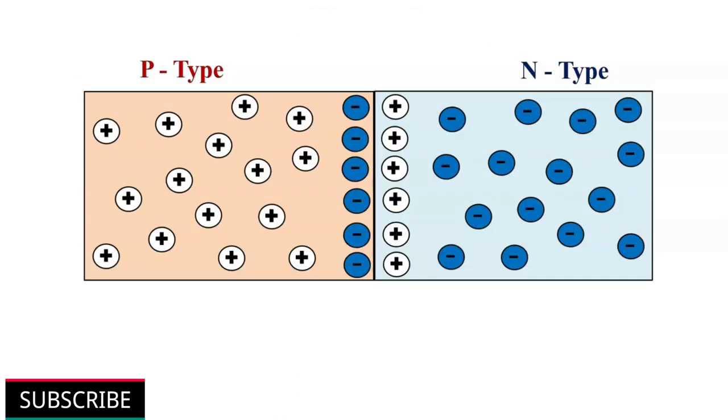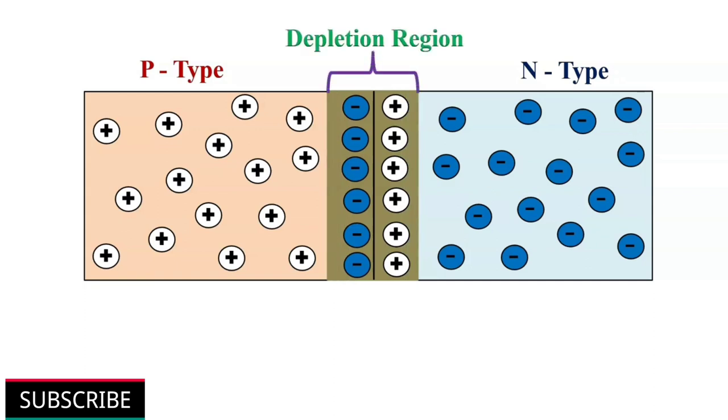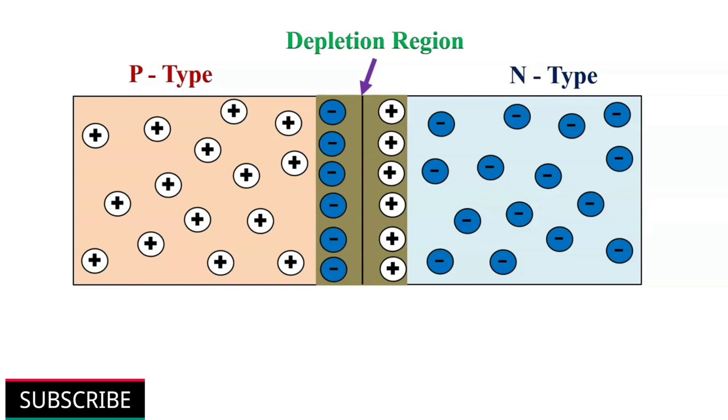A layer of negative charge is developed on the p-side of the junction. Similarly, a layer of positive charge is developed on the n-side. This region of positive and negative charge on either side is termed as the depletion region. The width depends on how heavily each side is doped. An electric field is created in the depletion region and prevents further diffusion, because the positive charge on the n-side repulses holes crossing from p-side to n-side, and negative charge on the p-side repulses electrons crossing from n-side to p-side.